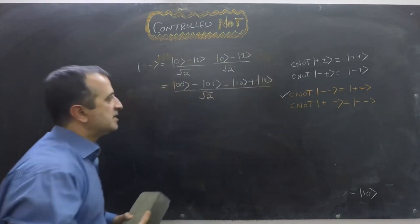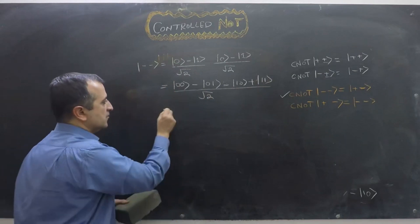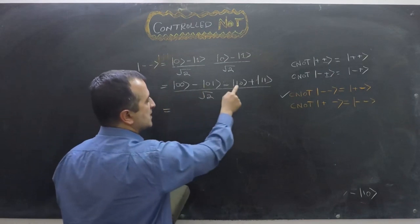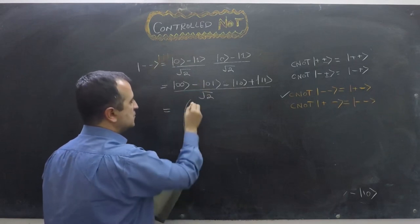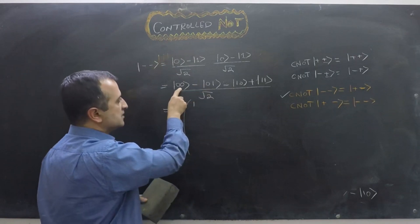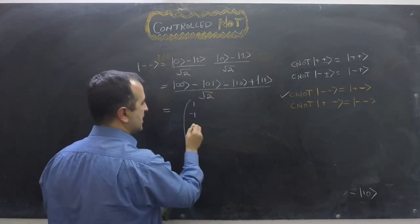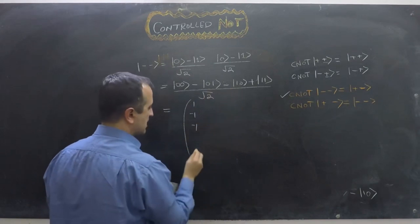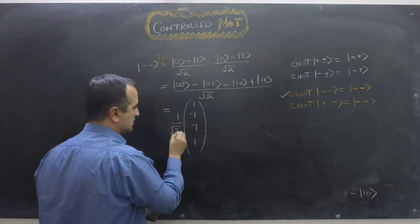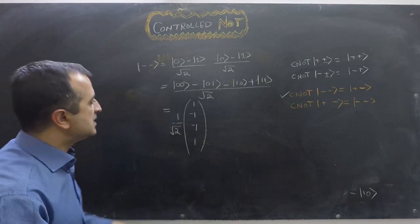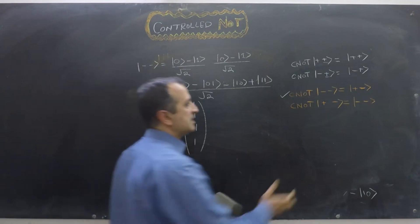To verify using the matrix we convert this to a vector. The coefficients give us 1 at position 0, −1 at position 1, −1 at position 2, and +1 at position 3, with a factor of 1/2 outside. We then apply the CNOT matrix to this vector.